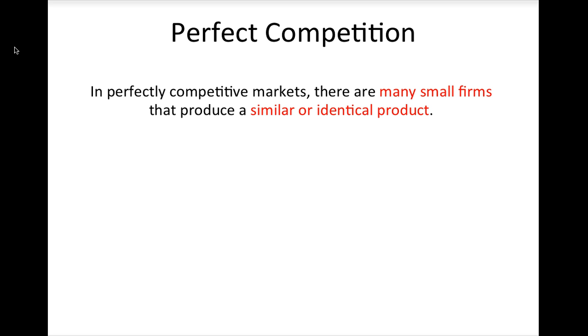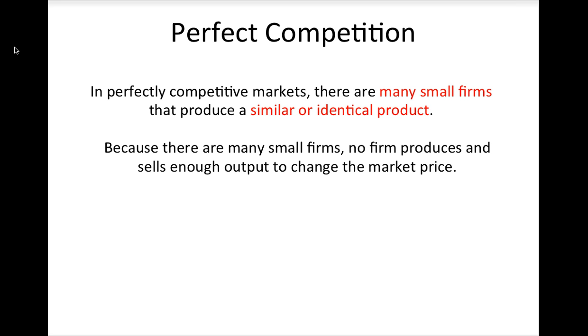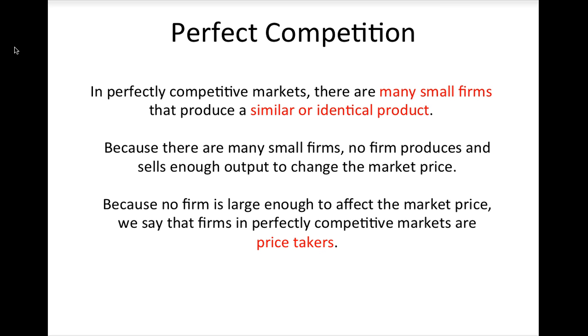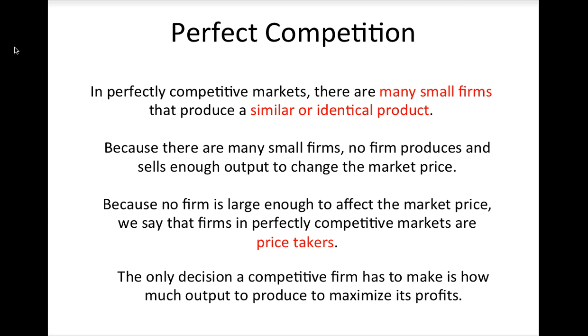When we analyze a firm's supply choice we have to consider the market environment in which the firm operates. We will start with the simplest case from an analytical perspective, which is a perfectly competitive market. In a perfectly competitive market there are many small firms that produce a similar or identical product. Because there are many small firms, no firm can produce enough output to change the market price, so we say that firms in perfectly competitive markets are price takers. Thus the only decision the firm has to make is how much output to produce in order to maximize its profits.